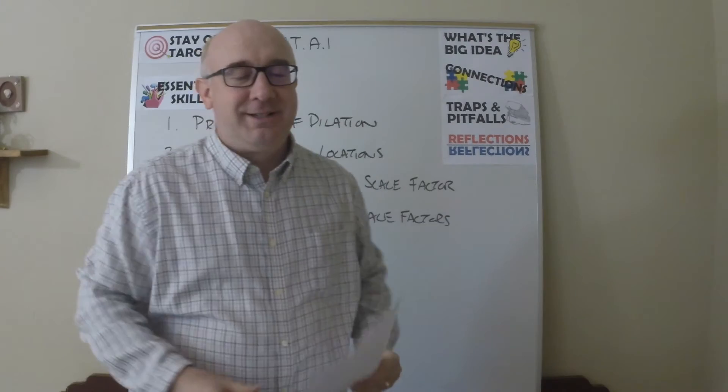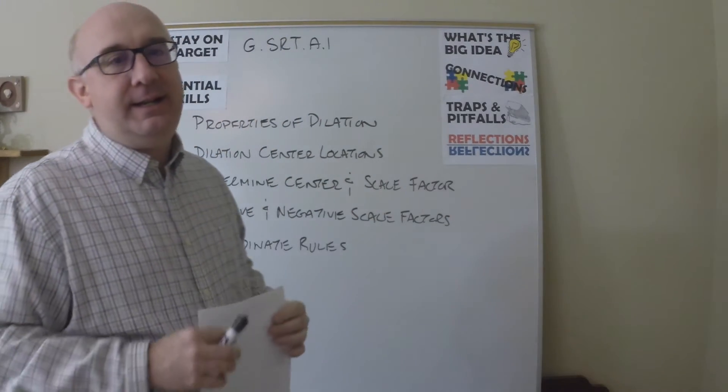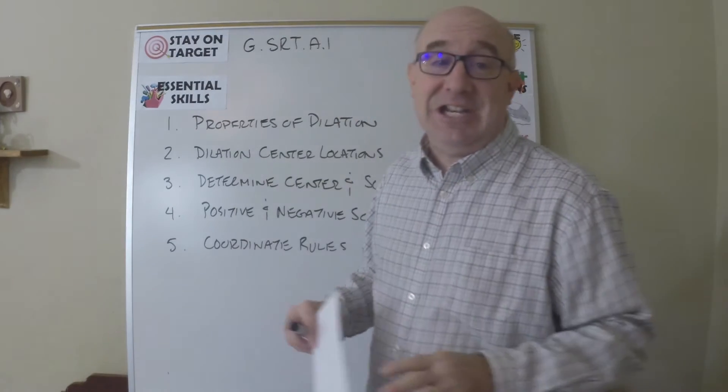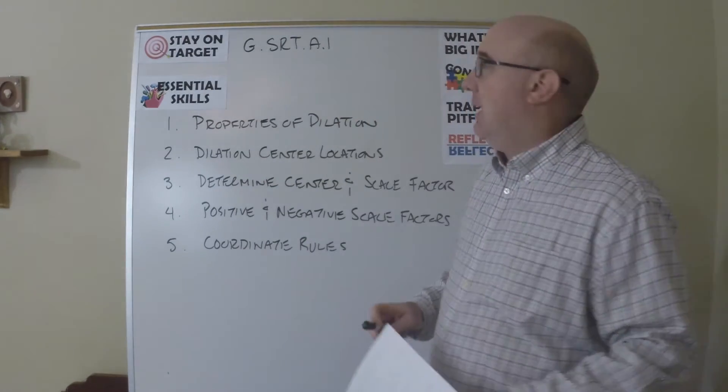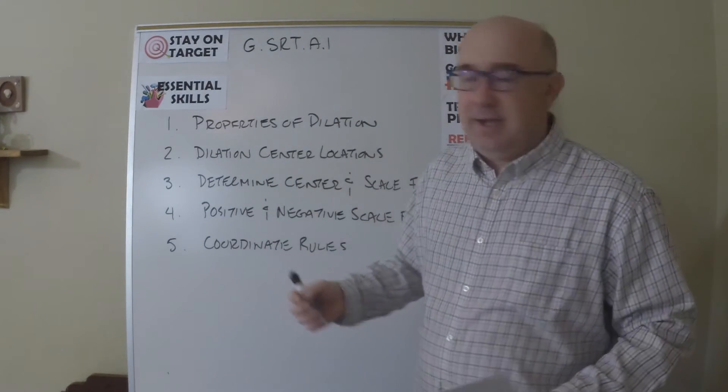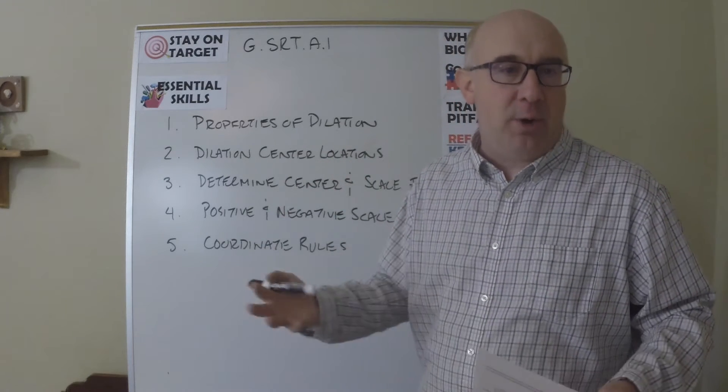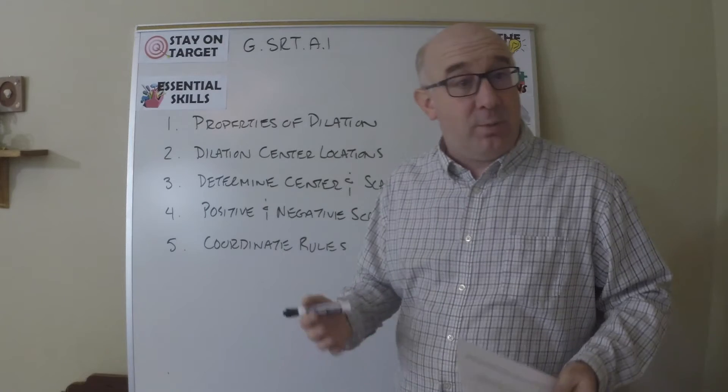Let's take a look at GSRT A1. This objective deals with everything about dilations, so you look at the properties of the dilation, the center locations in, on, and out of a shape, how it looks, and what takes place.